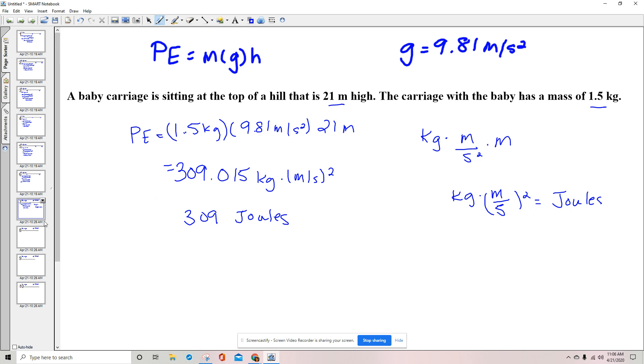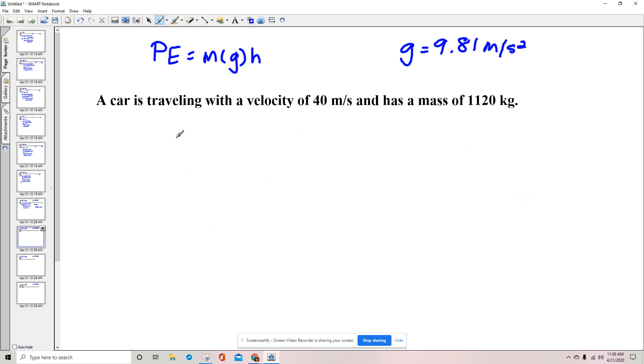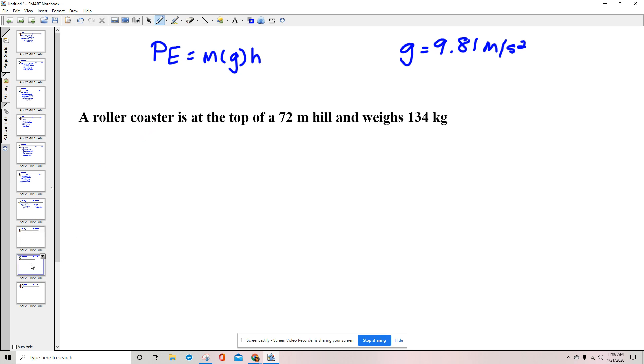Let's do another example. The roller coaster is at the top of a 72 meter hill and weighs 134 kilograms.